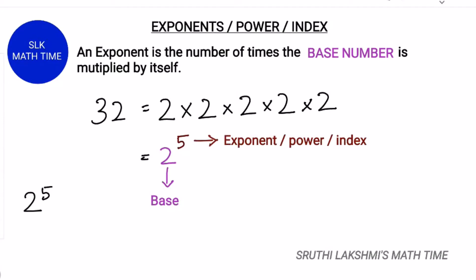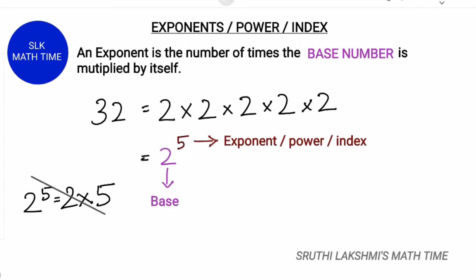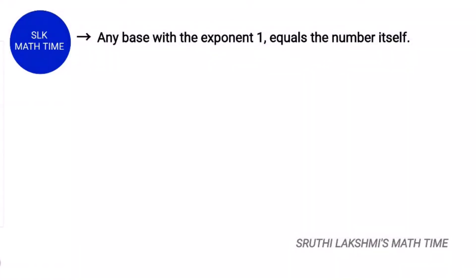Some people think that 2 power 5 is 2 x 5, which is wrong. Let's see some things to remember about exponents.